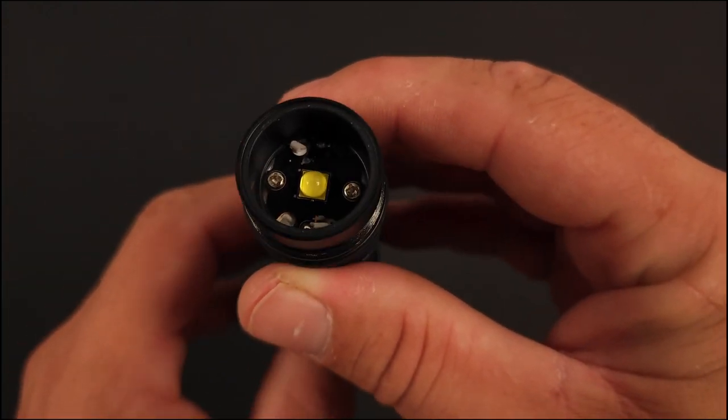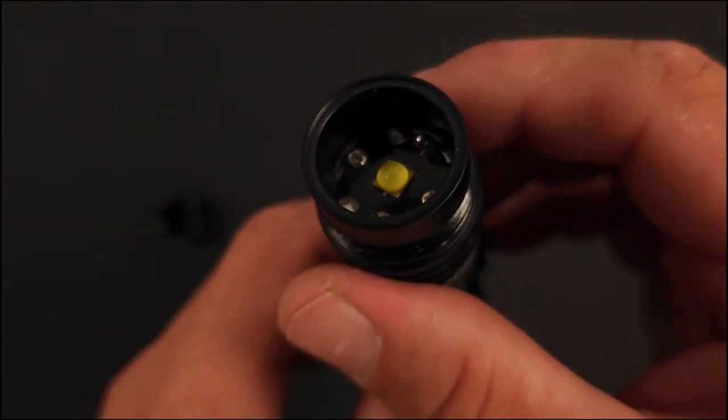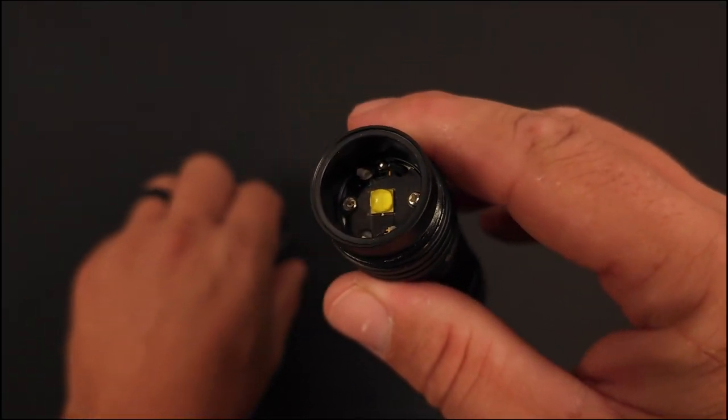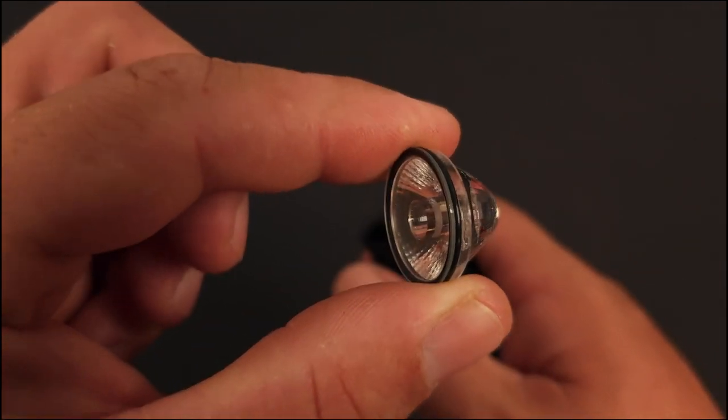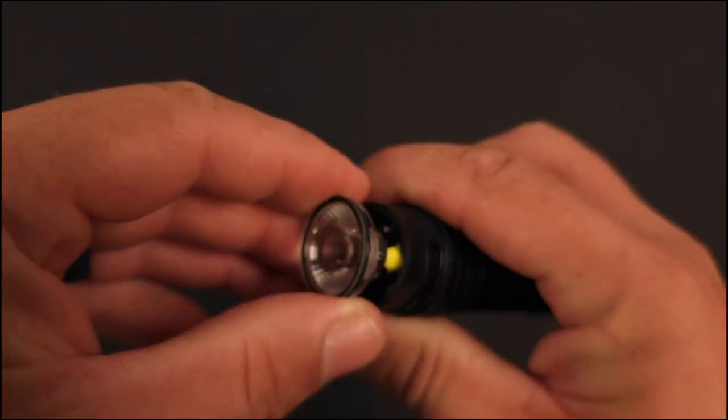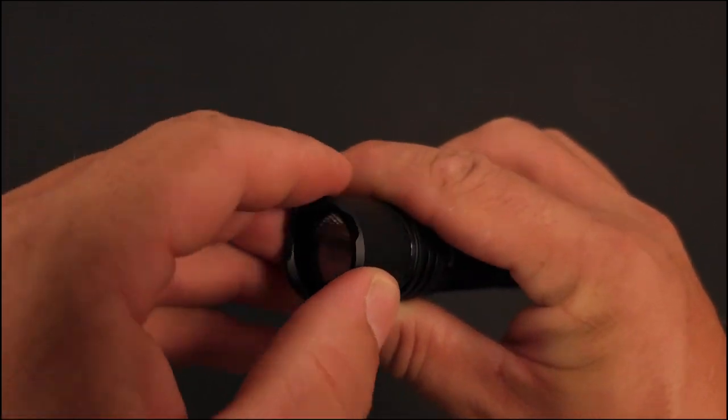Unfortunately I can't tell - there's a little too much thermal paste there to be able to tell from the side if this is a copper or aluminum MCPCB. Either way, you'll see again that lens here. It does have a glass cover on it and that is O-ring sealed. We'll put that back on.